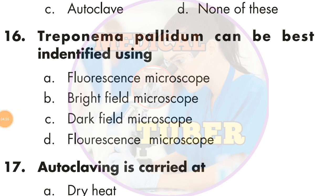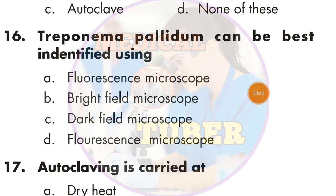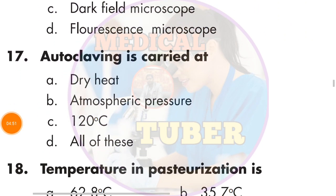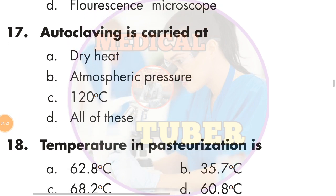Question number 16: Treponema pallidum can be best identified using — the answer is B — bright field microscope. Question number 17: Autoclaving is carried out at the temperature of pasteurization.